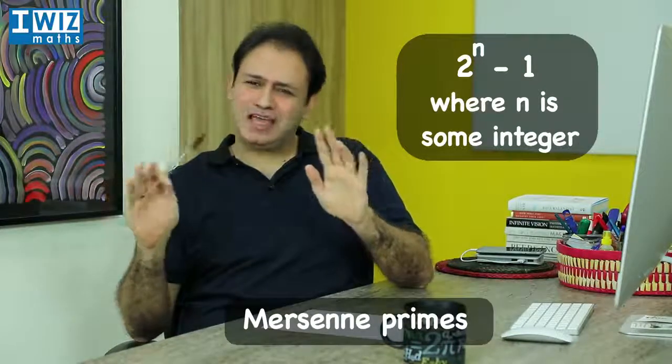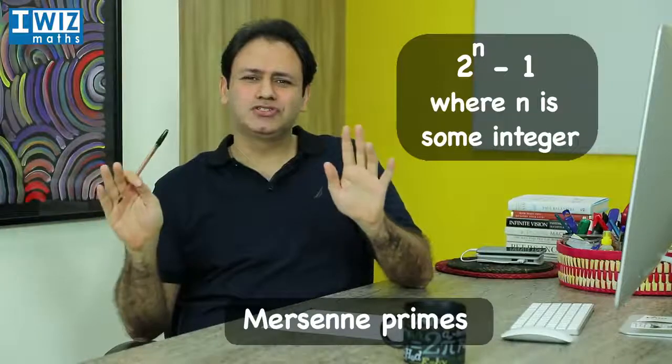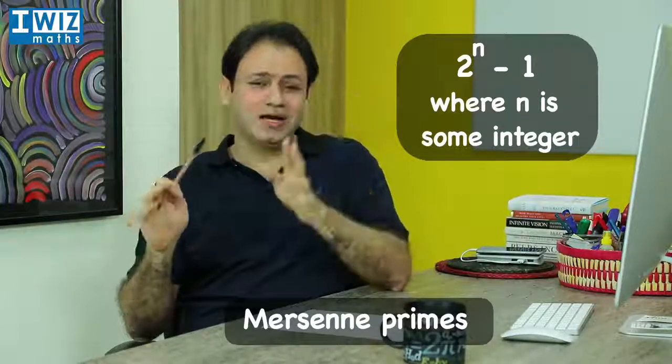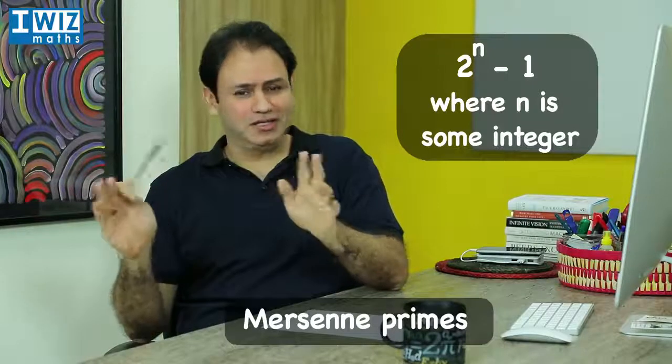So essentially, Mersenne primes just have this very simple structure to them that is 2 to the n minus 1. If it's a prime, it's a Mersenne prime.